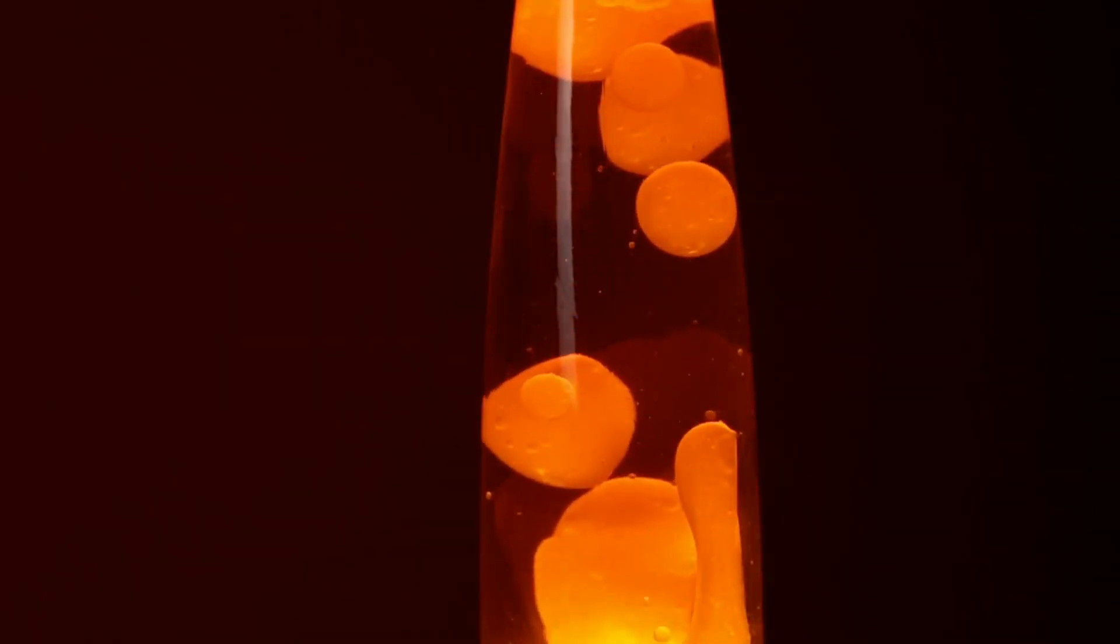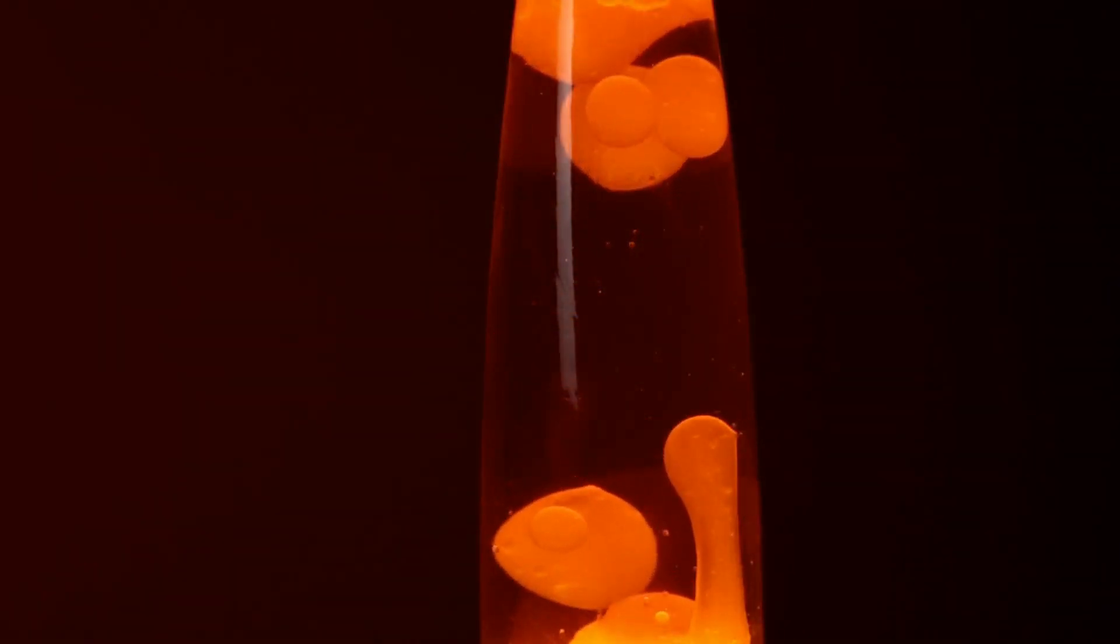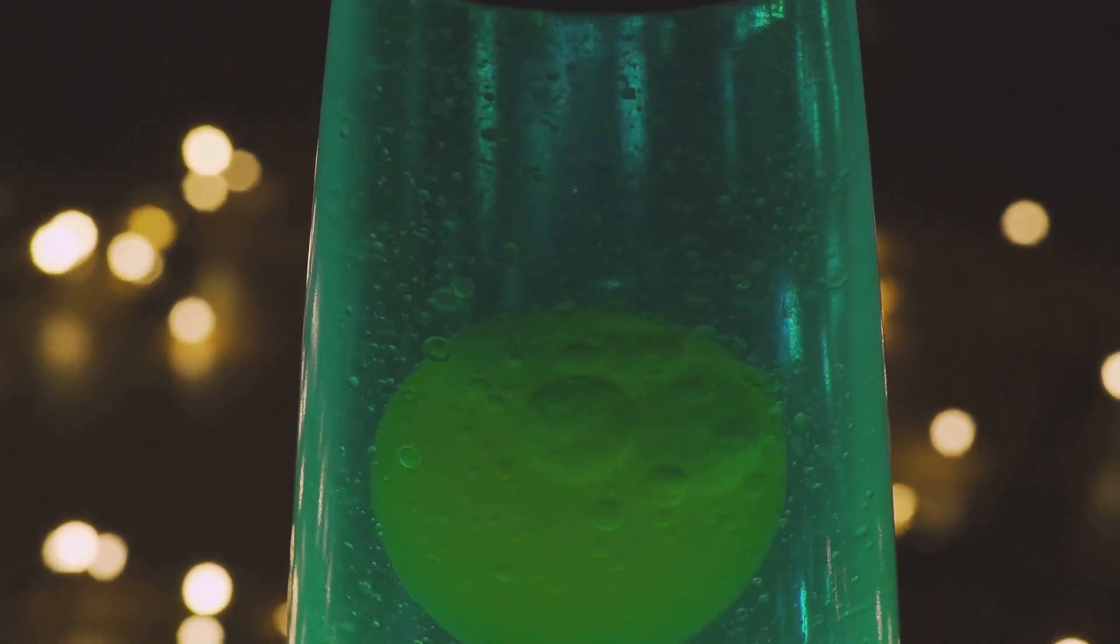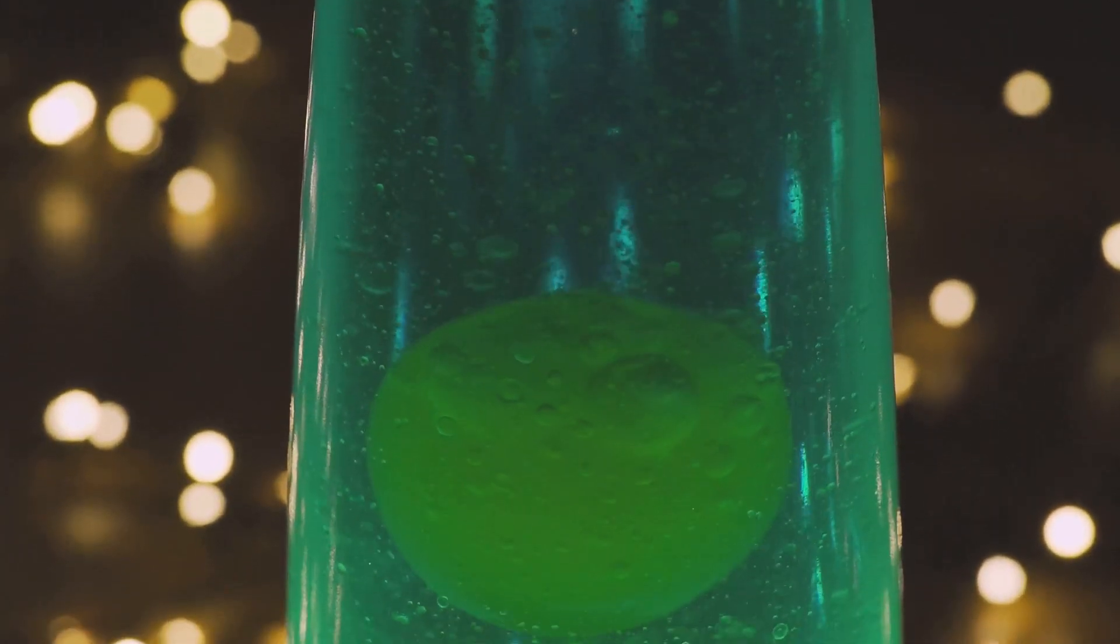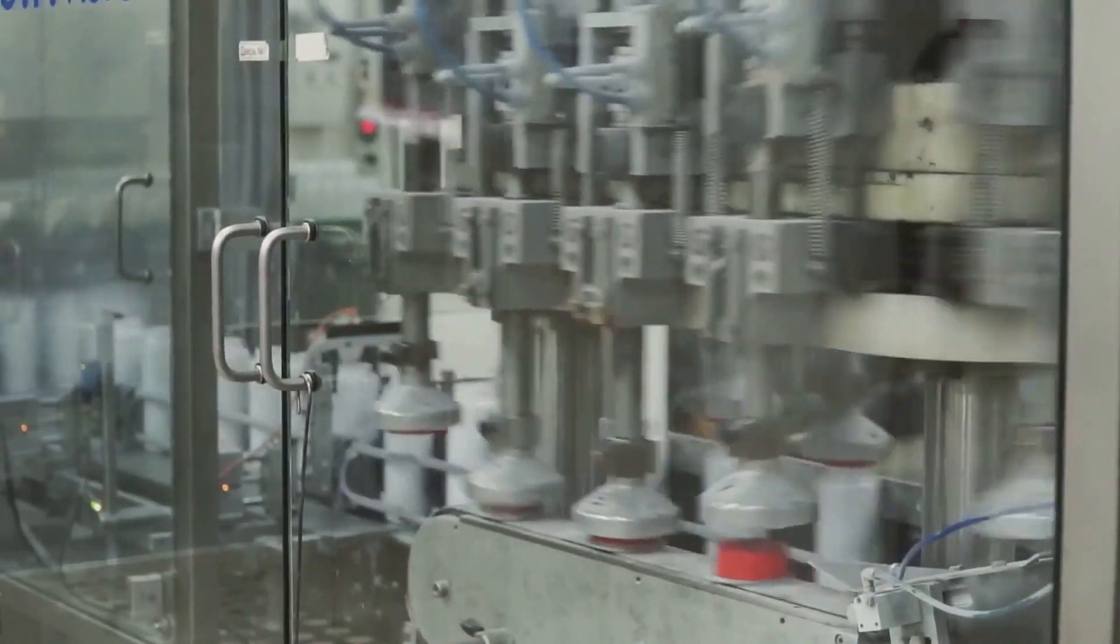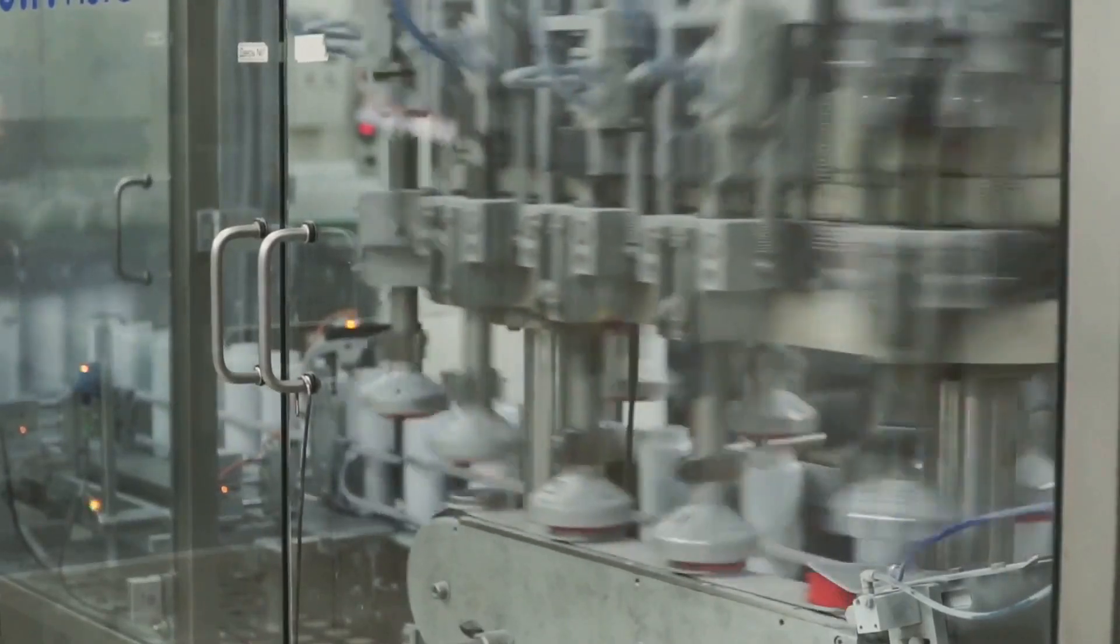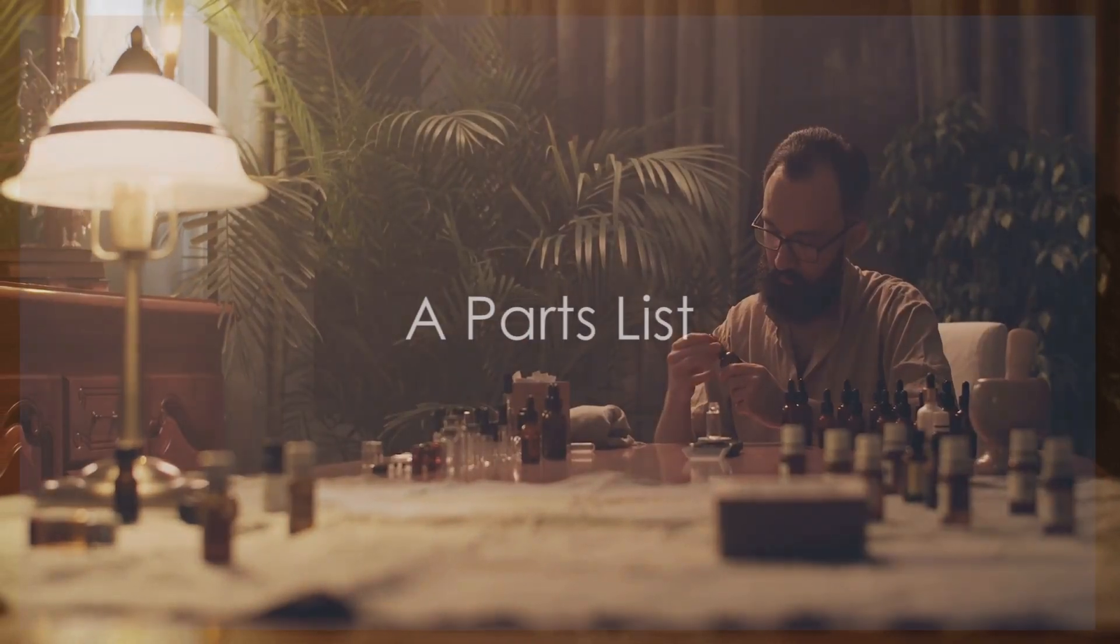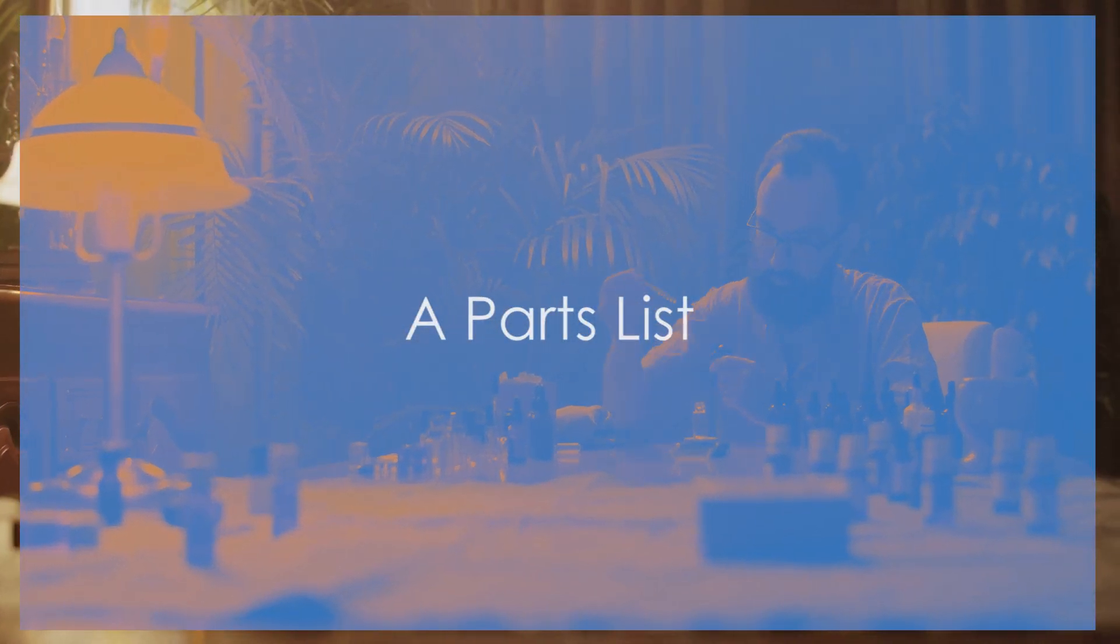You ever just space out staring at a lava lamp? They're mesmerizing, right? It's like watching two liquids slug it out in slow motion, but they never actually touch. Turns out there's a whole lot of science going on inside that groovy little lamp. Today we're going behind the scenes to see how these things are made. Get ready to get your hands dirty because we're about to break down the magic of the lava lamp.